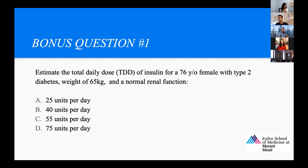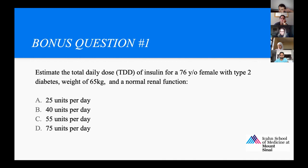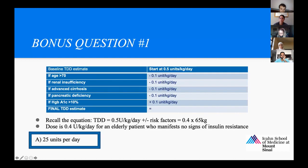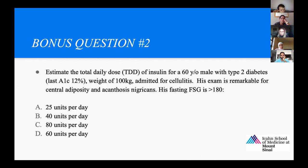Next question: estimate the total daily dose for a 76-year-old female with type 2 diabetes, normal renal function, and a weight of 65 kilos. The correct answer is 25 units. The risk factor is that she is over 70 — no other risk factors, no signs of insulin resistance. So we do 0.4 times 65, and we get 25 units.